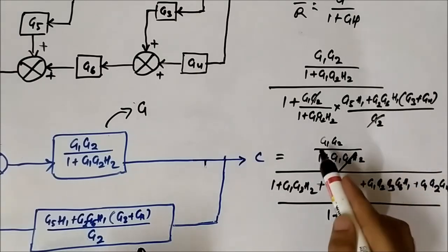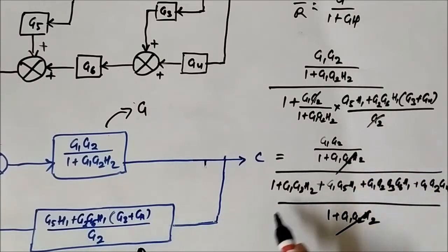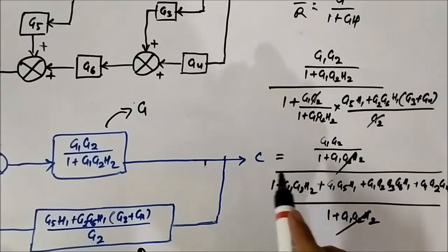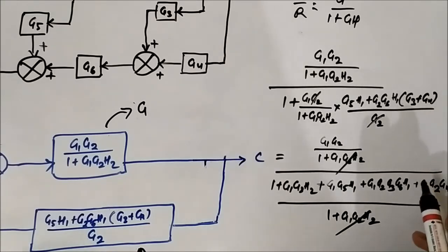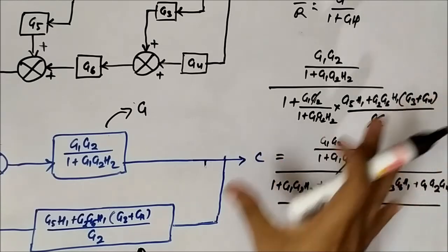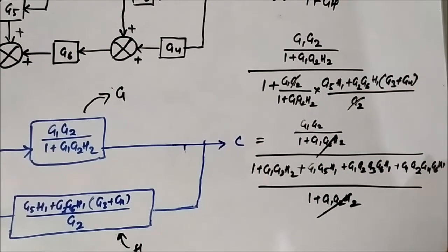This gets cancelled out from both here and here. So we have G1 G2 by 1 plus G1 G2 H2 plus G1 G5 H1 plus G1 G2 G3 G6 H1 and G1 G2 G4 G6 H1. This is the final simplified expression.